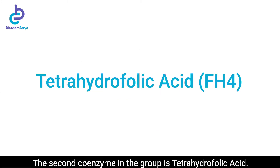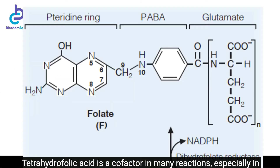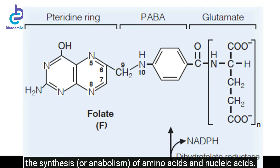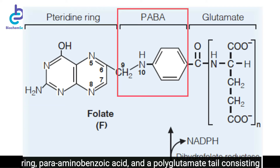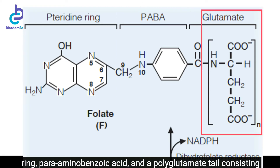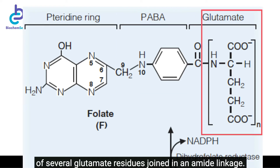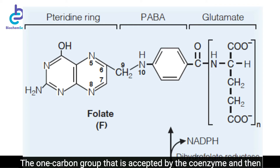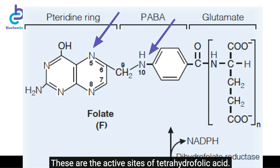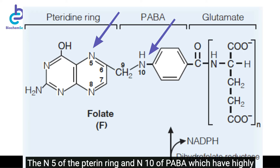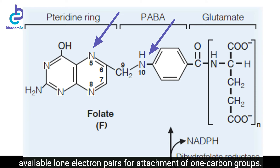The second coenzyme in the group is tetrahydropholic acid. Tetrahydropholic acid is a cofactor in many reactions, especially in the synthesis of amino acids and nucleic acids. It has three major structural components: a bicyclic pteridine ring, para-aminobenzoic acid, and a polyglutamate tail consisting of several glutamate residues joined in an amide linkage. The one-carbon group accepted by the coenzyme and transferred to another compound is bound to N5, N10, or both — these are the active sites of tetrahydropholic acid. N5 of the pteridine ring and N10 of PABA have highly available lone electron pairs for attachment of one-carbon groups.